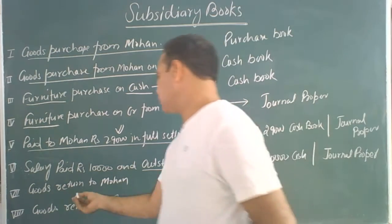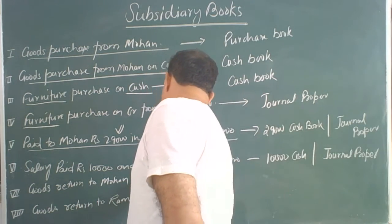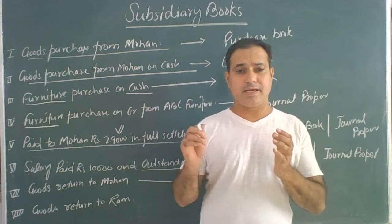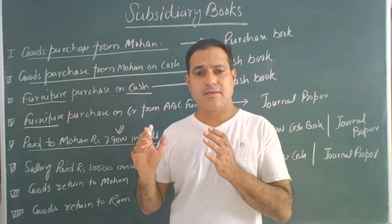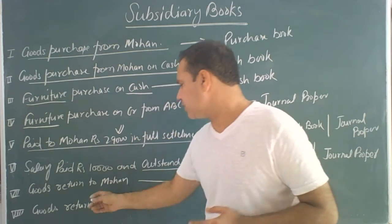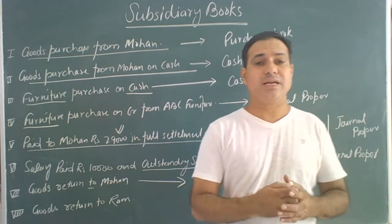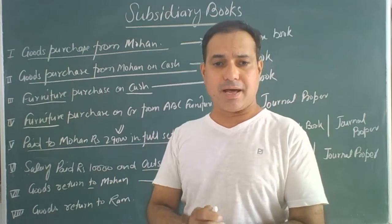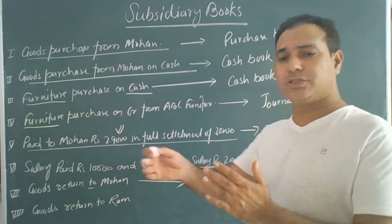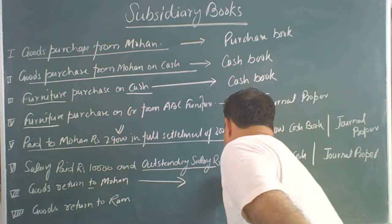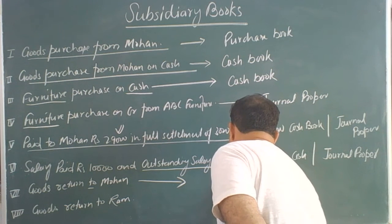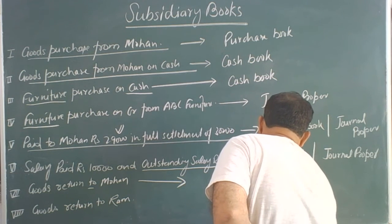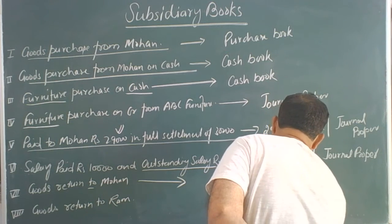Next transaction: goods returned by Mohan. Whenever we return goods to any supplier, it will go to the purchase return book.